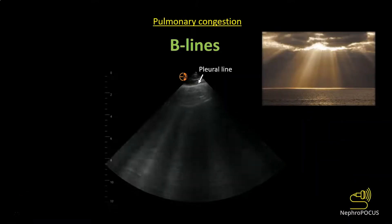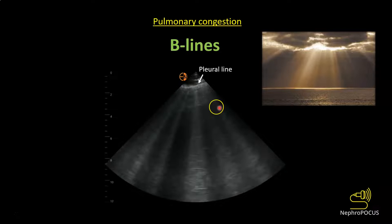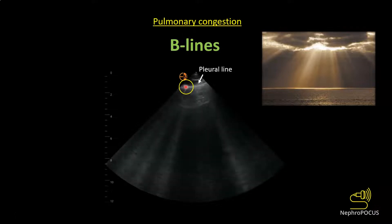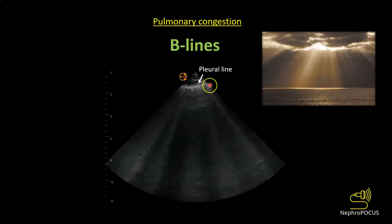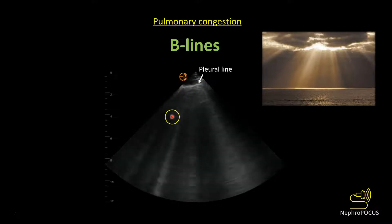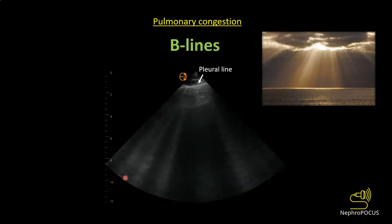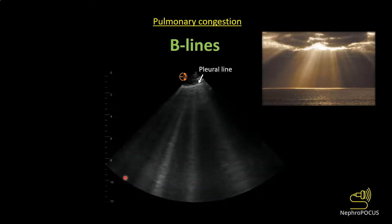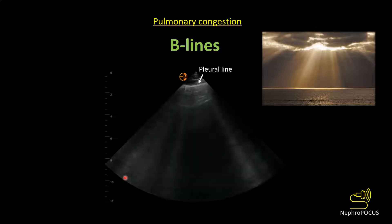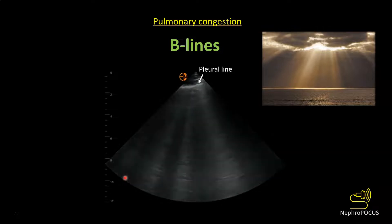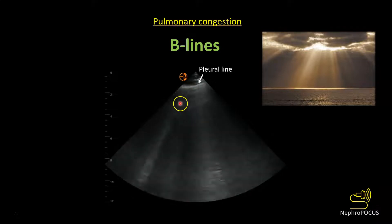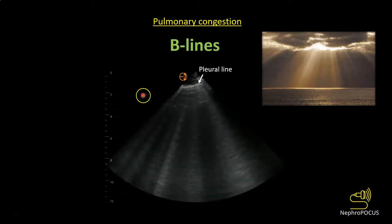B lines are vertical hyperechoic artifacts arising from the pleural line and extending to the bottom of the screen. Ensure that you have adequate depth of at least 10 to 12 centimeters; otherwise you can have short-path reverberation artifacts which can be confused with B lines.